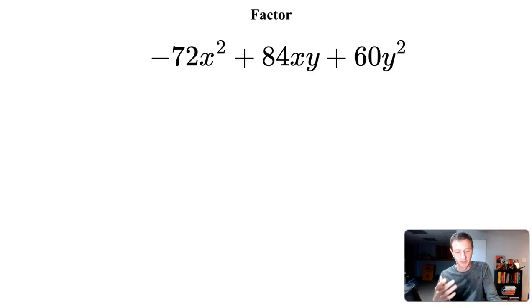Now I'm looking at the leading negative and the coefficients 72, 84, and 60. I need to find a GCF amongst those three terms. If you don't want to spend a lot of time, go to your calculator and divide everything by two, and maybe you can start to see a pattern.